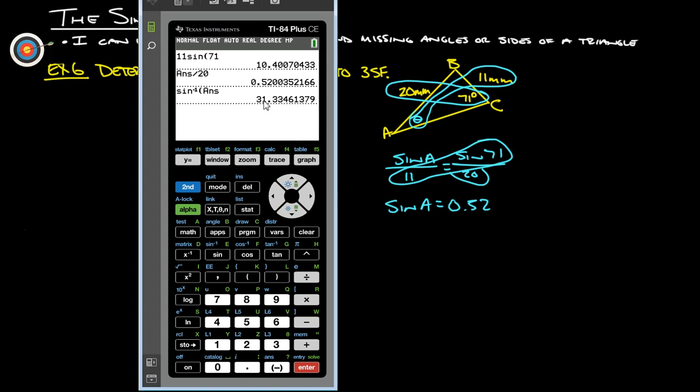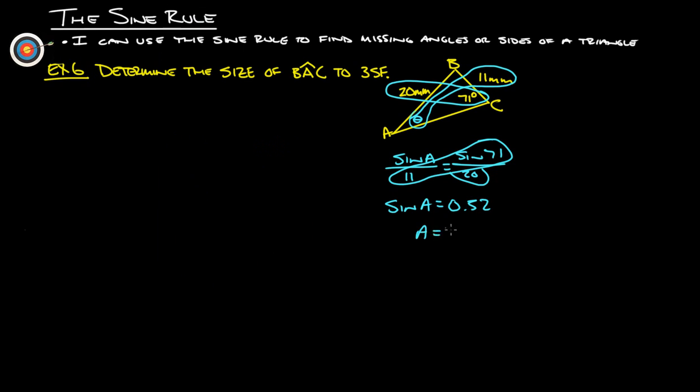Now, it says three significant figures, so first, second, third, 31.3 degrees would be what angle A is.